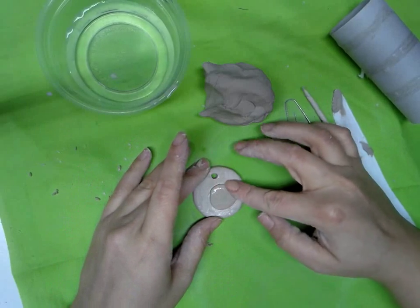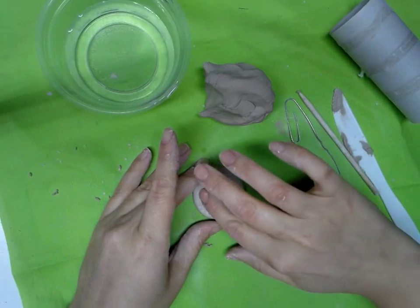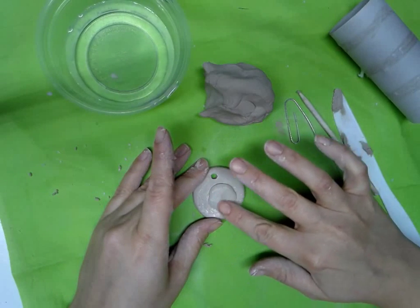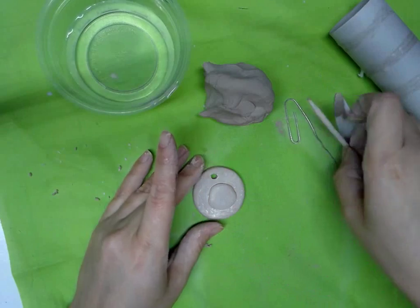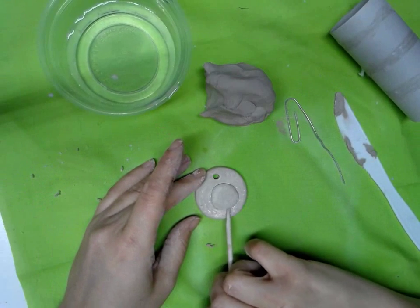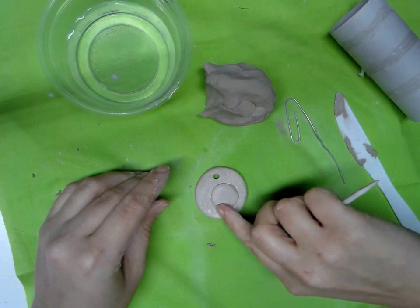Then I can smooth out any edges I want to, make it how I want it to look. When I smooth it out, I notice the edges kind of flattened out. So I'm going to use this stick and push it back again, get that back in there.